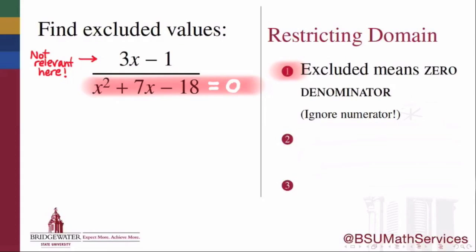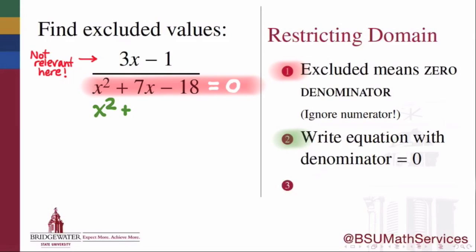So now that we know what the job is, to find those values which make the denominator 0, that tells us that we should set up an equation where the denominator is set equal to 0, so x squared plus 7x minus 18 is equal to 0, and any x which solves that equation will be an x that we need to exclude from the domain of this expression. That means that all we have to do now is to solve this equation for x.